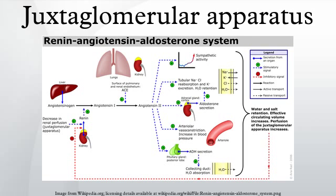A decrease in GFR means less solute in the tubular lumen. As the filtrate reaches the macula densa, less NaCl is reabsorbed. The macula densa cells detect lower concentrations of Na and Cl and upregulate nitric oxide synthetase. NOS creates NO, which catalyzes the formation of prostaglandins. These prostaglandins diffuse to the granular cells and activate a prostaglandin-specific Gs receptor. This receptor activates adenylate cyclase, which increases levels of cAMP. cAMP augments renin release.